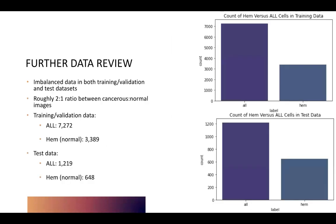We explored the data further and discovered that the data is biased towards ALL cells and could benefit from data augmentation to balance the data. The initial dataset has a roughly two-to-one ratio between cancerous and normal images.